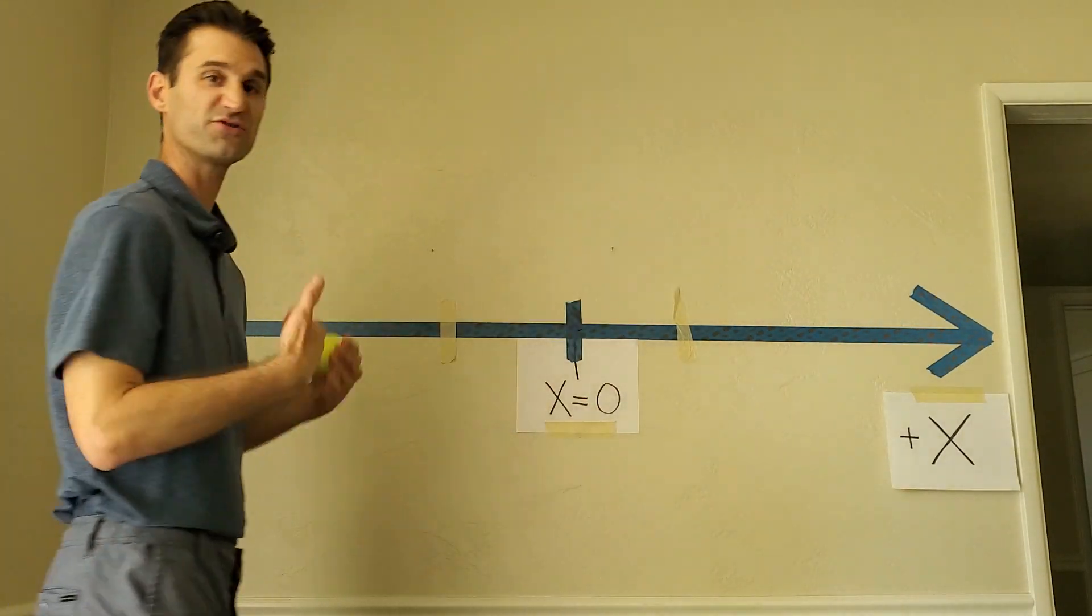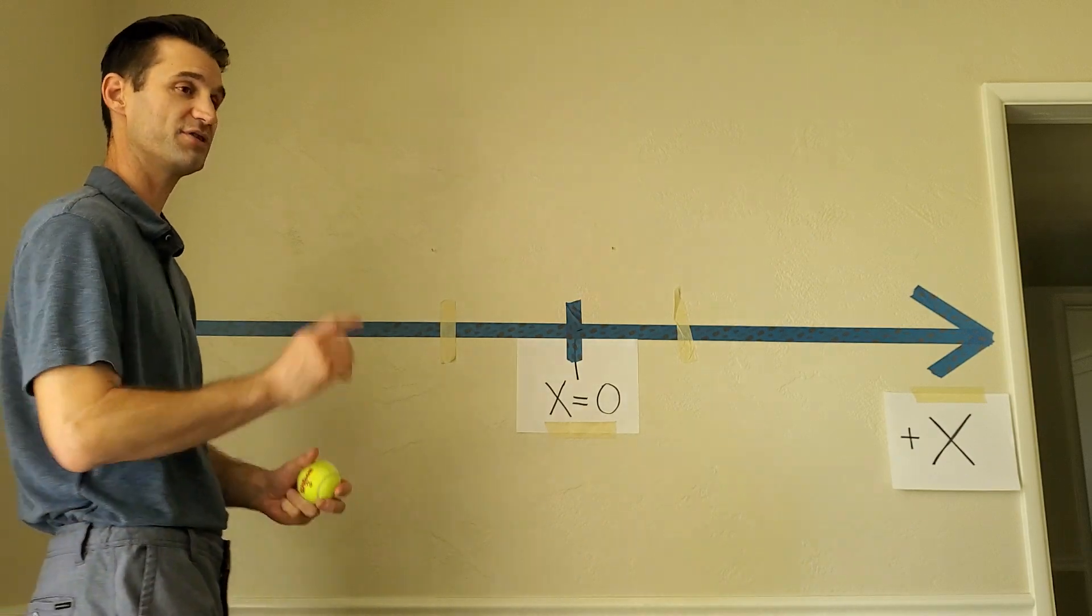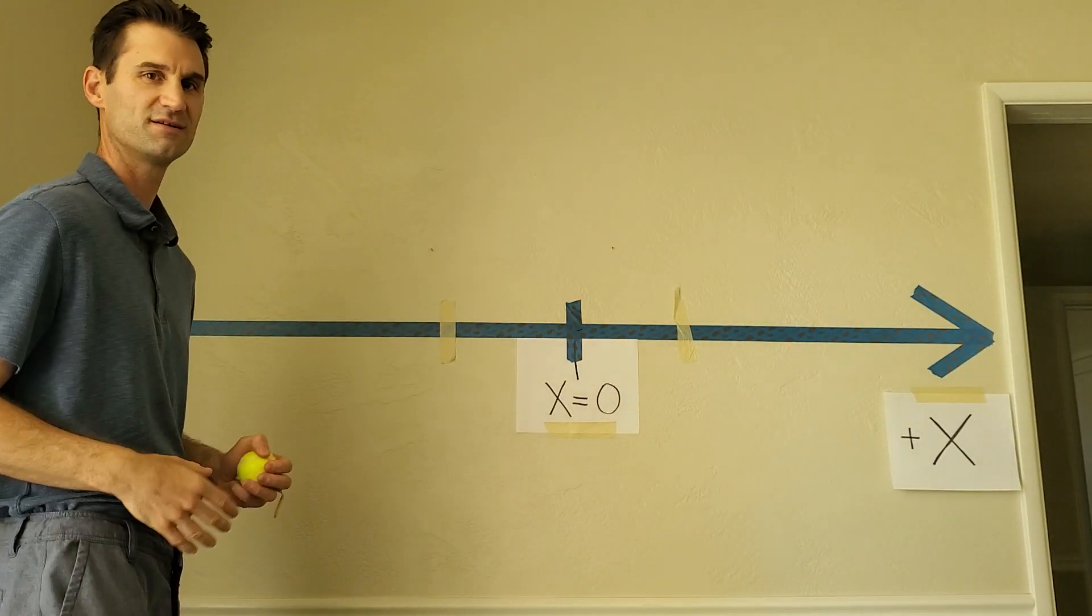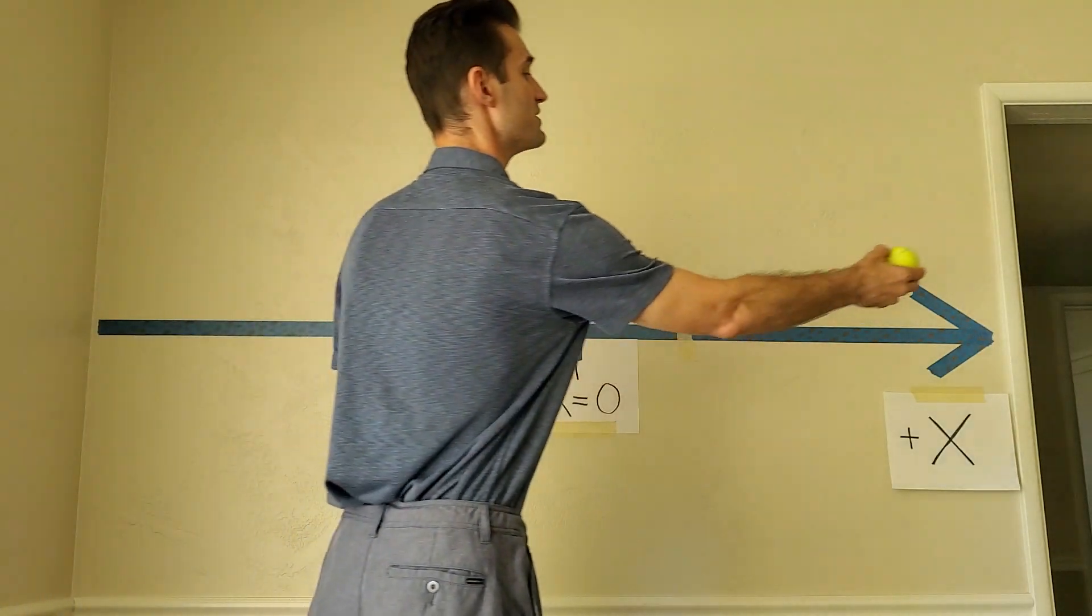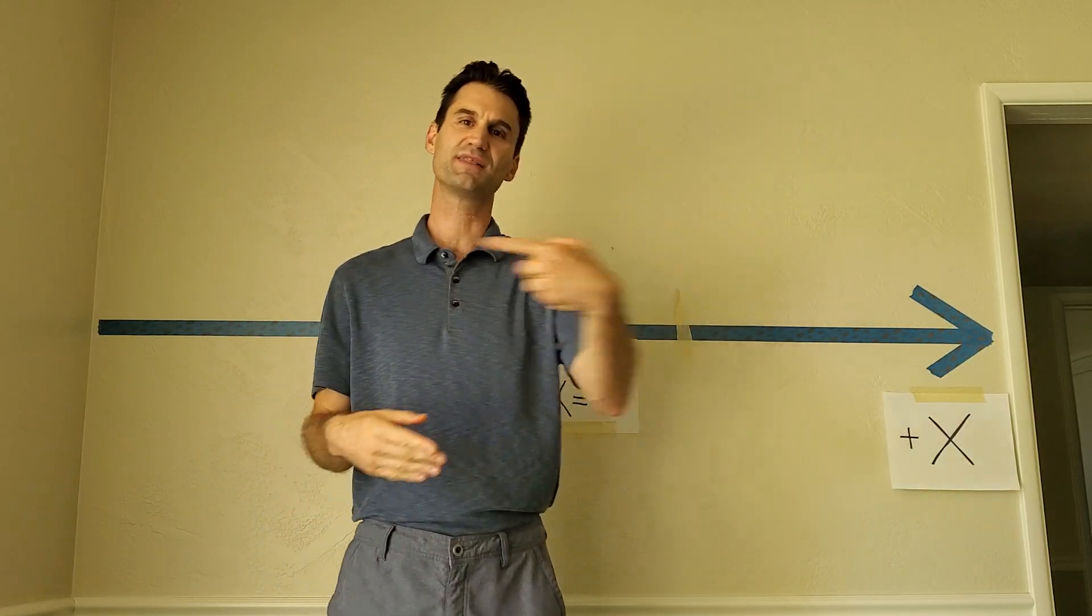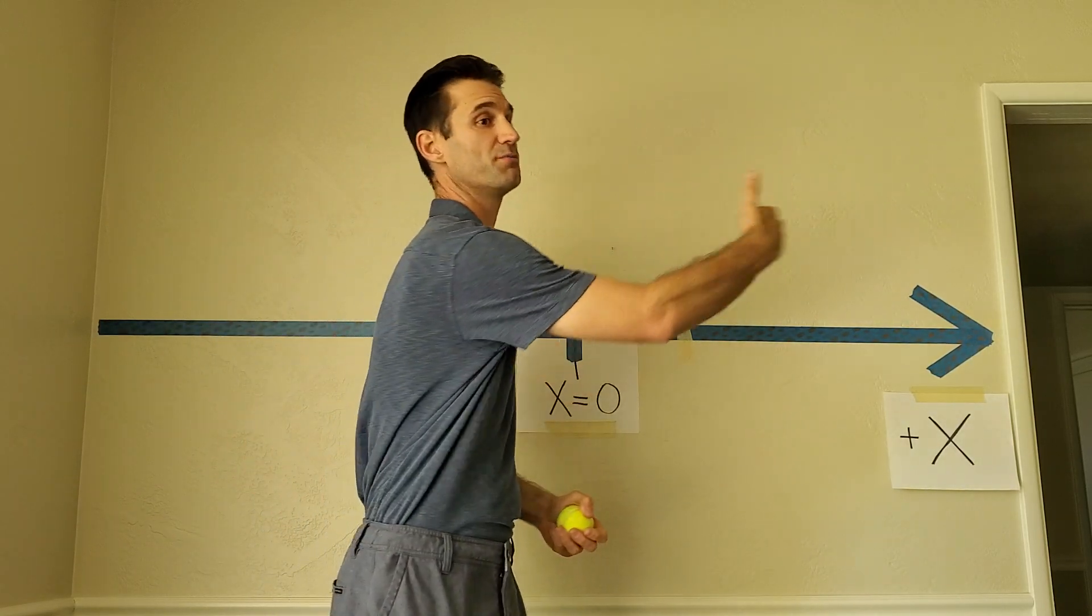On the way out, is the ball speeding up or slowing down? We know that the velocity is in the positive direction. Notice how it slowed down and stopped. Velocity that way, that means the acceleration must have been that way for the initial part.